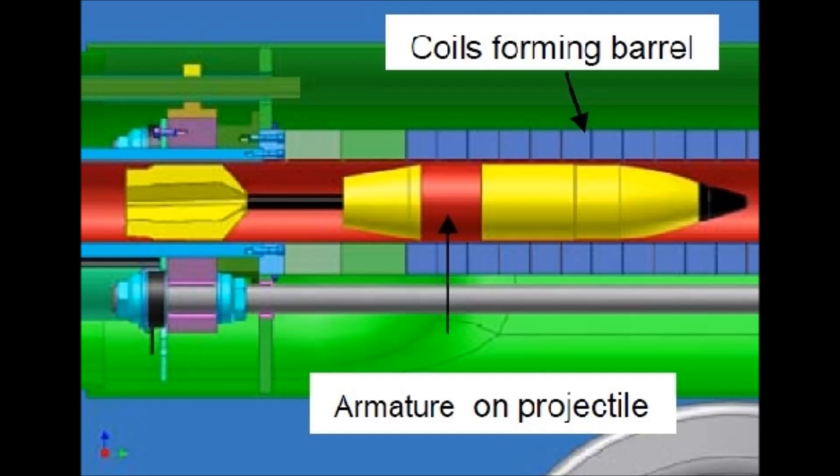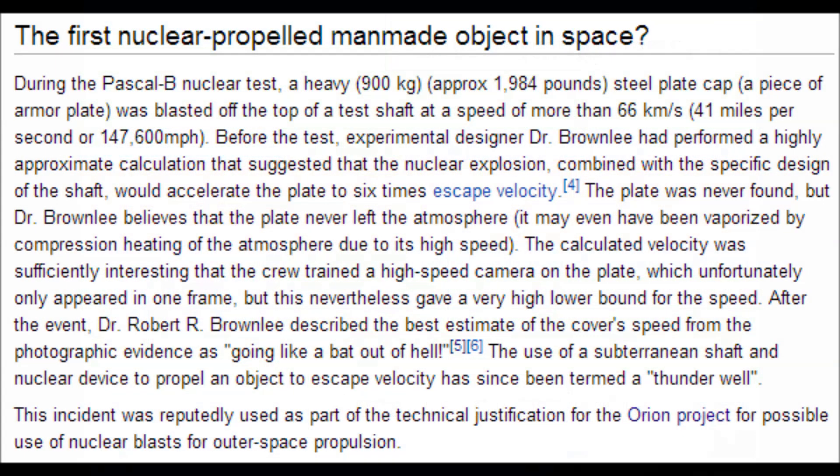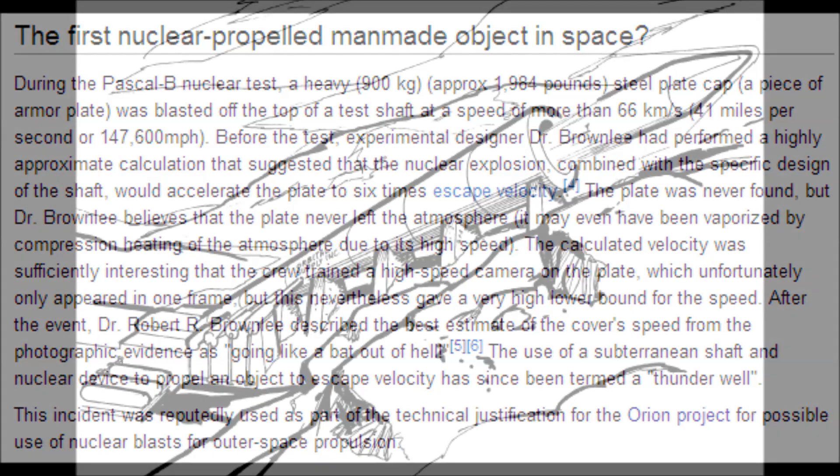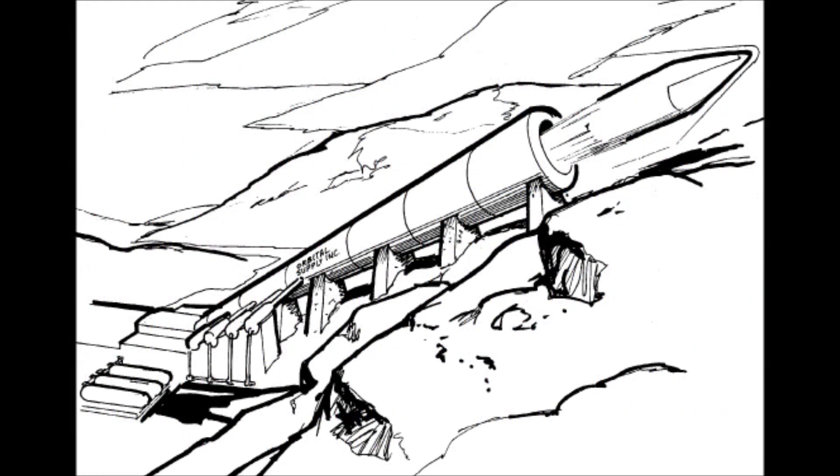And yes, I know I'm going to get a mention of this. There is that nuclear test that was a little bigger than they expected and it blew the steel manhole cover off the test shaft so fast that it was never found. And the photographic evidence suggests that it may have, in fact, exceeded escape velocity.